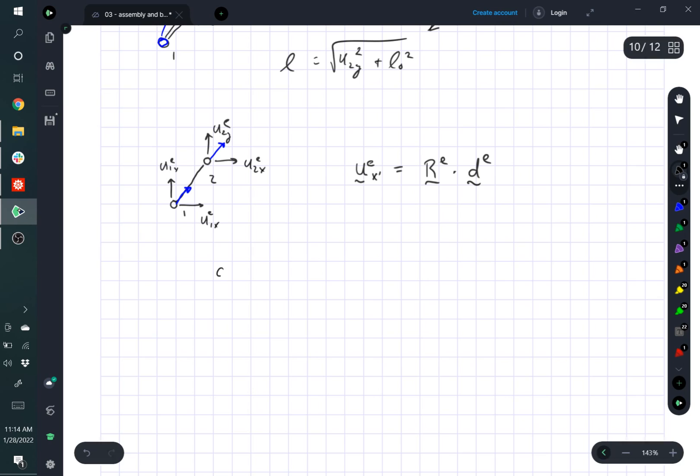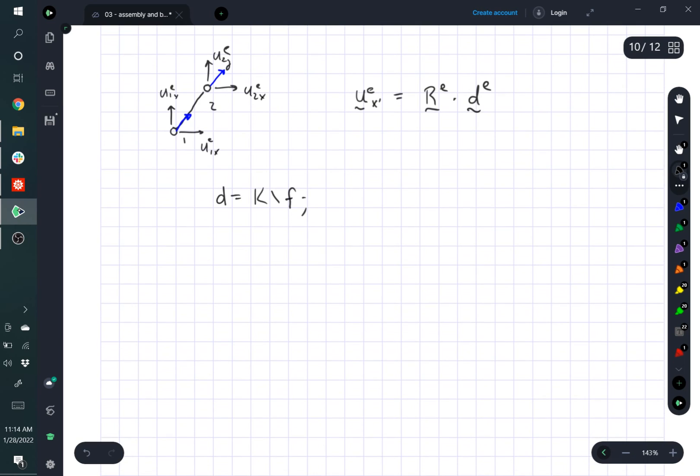All right, so you've solved your system of equations. You have K, or D is equal to K backslash F. Make sure you use backslash and not forward slash.